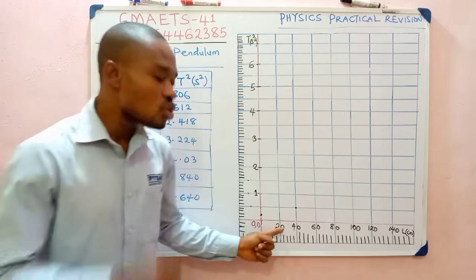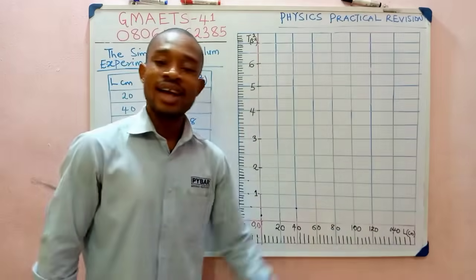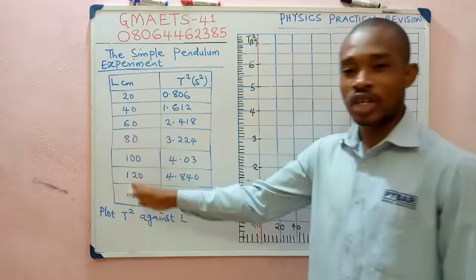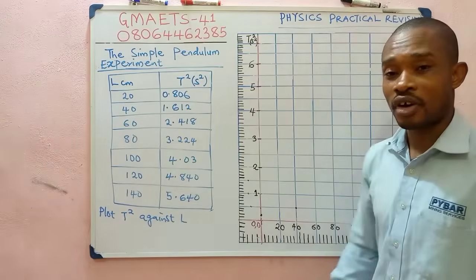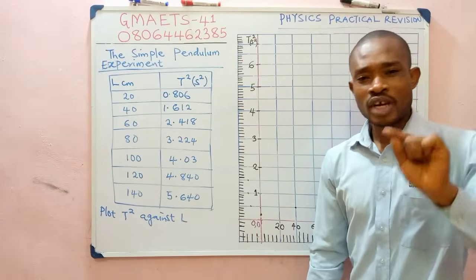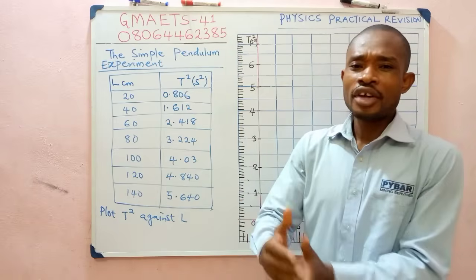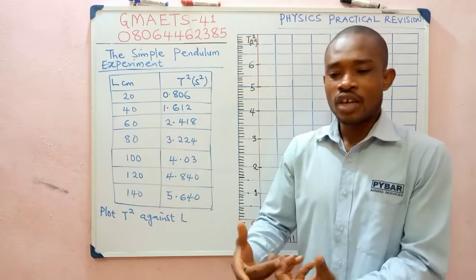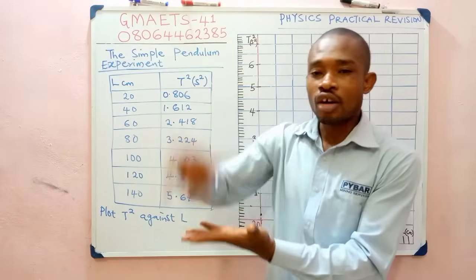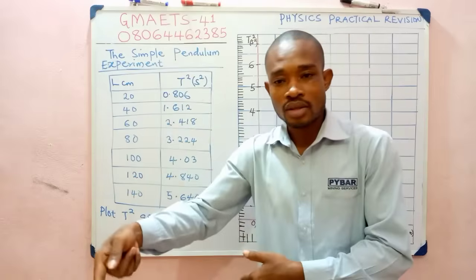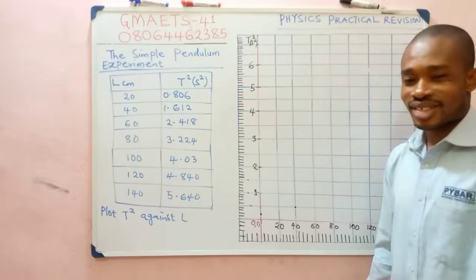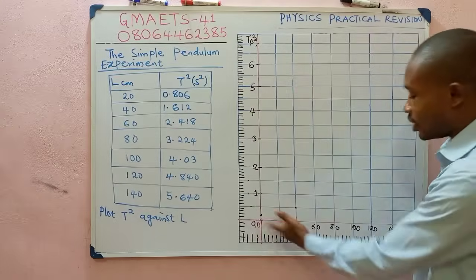Why did I use 20 units for the L axis? I did a mini calculation. Recall that to get your units, I already told you it's going to be helpful to use the highest value in the column of the table you are about to plot, divided by the number of lines available for plots.